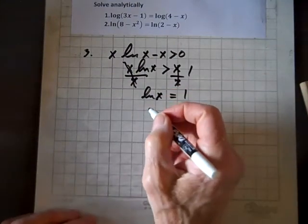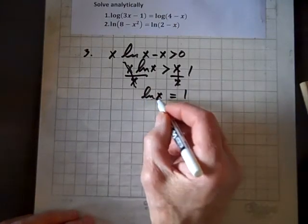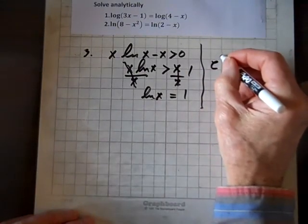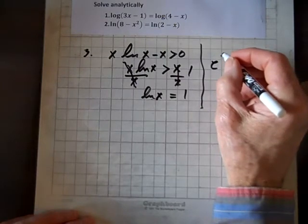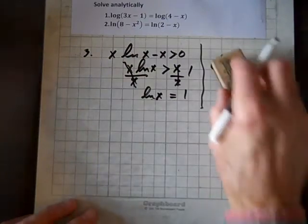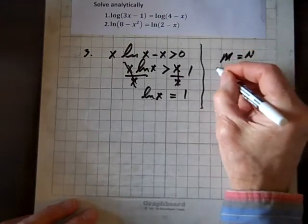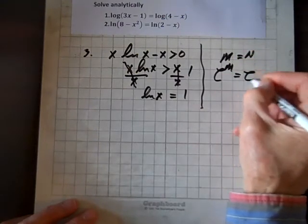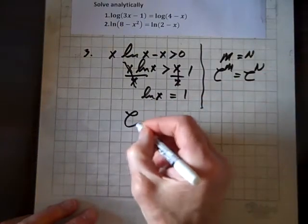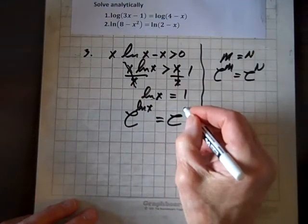And now, I'll tell you what we'll do. We'll let this be the exponent. I'll show you what I mean. If m equals n, then e to the m equals e to the n. So now, since these are equal, then e to the ln of x equals e to the first, which is e.